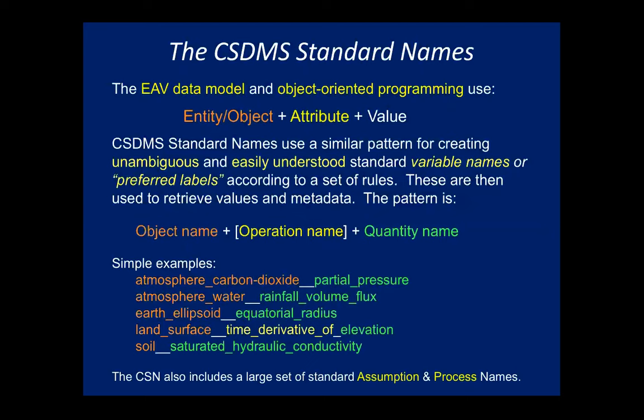Here are some basic examples showing the CSDMS names pattern. The object part is shown in orange, the quantity part follows, and then there's an optional bracketed part in yellow — the operation name. This occurs commonly in models and datasets where you're looking at some operation applied to a quantity: the time derivative of elevation, some kind of area integral over a basin, or a function like the log of elevation. Semantically, when humans talk about these operations, they always say 'of' at the end — the Laplacian of this, the time derivative of this — so 'of' becomes a delimiter for the machine.